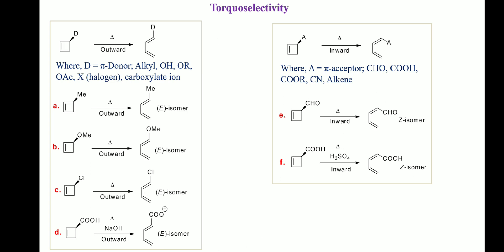For example, in reactions A, B, and C, because of the pi-donor tendency of methyl, methoxy, and chloro groups, outward movement of these groups results in formation of the E isomer over the Z isomer. In reaction D, outward movement of the carboxylate group occurs to avoid repulsive interaction between the negative charge and the pi bond in the transition state. In reactions E and F, because of the pi-acceptor tendency of aldehyde and carboxylic acid groups, inward movement occurs, resulting in formation of the Z isomer over the E isomer.